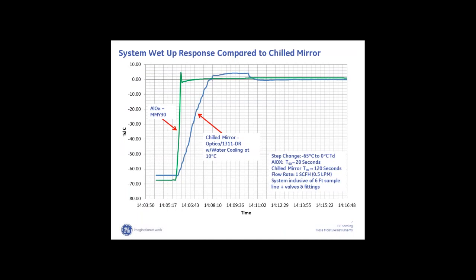These sensors have a very good wet-up response. You can think of the sensor as almost like a ceramic sponge. Just like a kitchen sponge will absorb a lot of water very quickly — a dry sponge thrown into a sink of water would suck it up almost immediately — but it takes time to dry out. The aluminum oxide has a high affinity for water and will suck it up very rapidly. Here we show a comparative graph of the response on a step change from about negative 65 to zero dew point, and that occurred in about 20 seconds at only one standard cubic foot per hour flow.